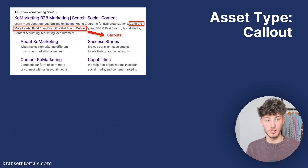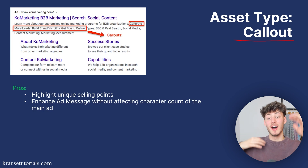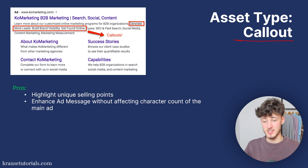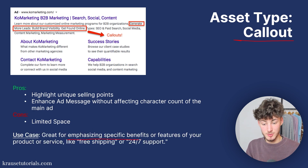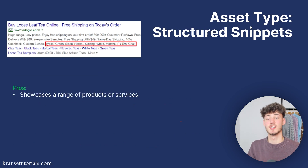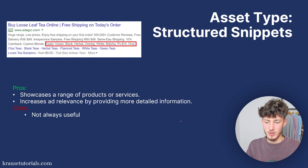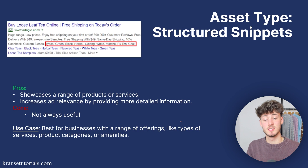Callouts work as call-to-actions inside your description — they highlight unique selling points and enhance your ad message without affecting the character count of the main ad, making it bigger. The only con is limited space. Use them to emphasize specific benefits like 'free shipping,' '24/7 support,' or 'unlimited revisions.' Structured snippets showcase a range of products or services, increasing ad relevance by providing more detailed information on what you offer — mostly used on e-commerce sites.